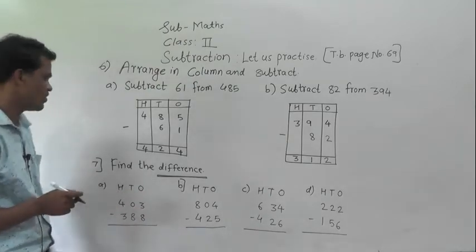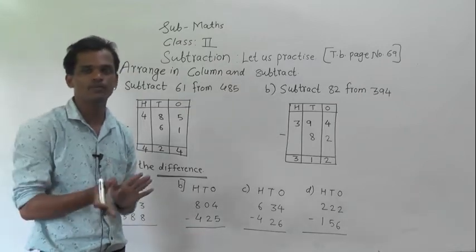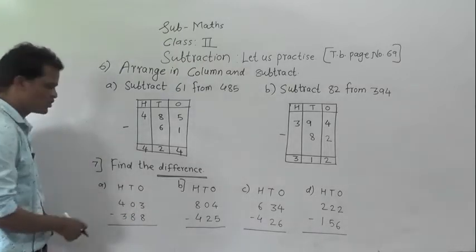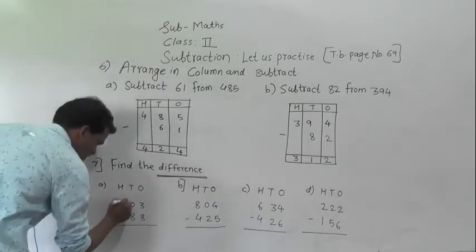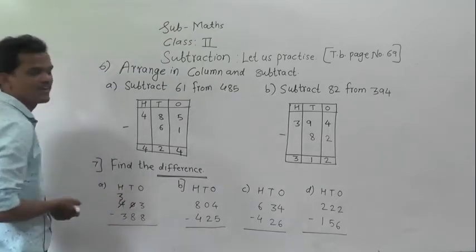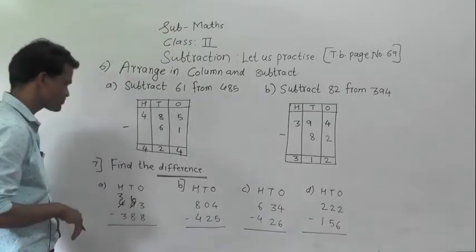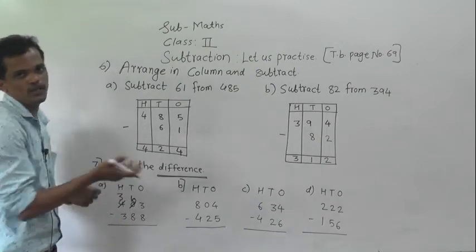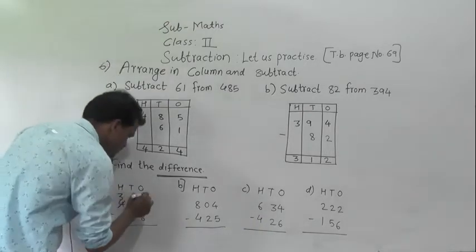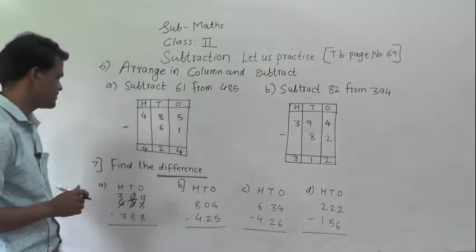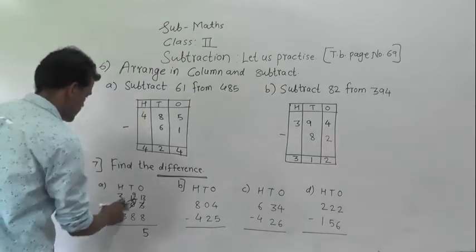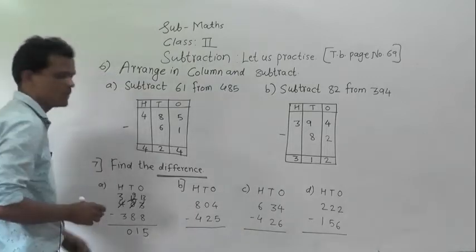Here 3 minus 8 is not possible because 3 is smaller. We can't subtract 8 from 3, so we need to borrow. But the tens place digit is 0, so regroup the hundreds digit: 400 regroups into 3 hundreds and 10 tens. Write 3 in hundreds and give 10 to the tens place. Then out of those 10 tens, give 1 ten to the ones place, leaving 9 tens. 3 plus 10 gives 13. Now 13 minus 8 is 5, then 9 minus 8 is 1, and 3 minus 3 is 0. So the answer is 15.